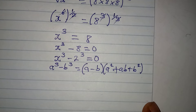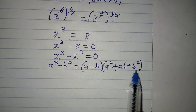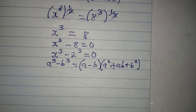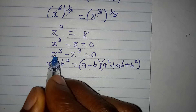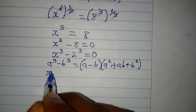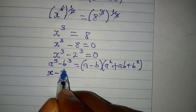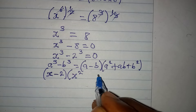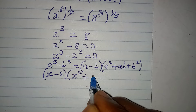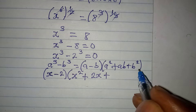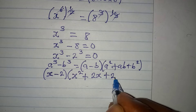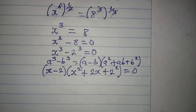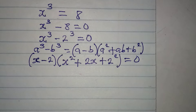How many students can remember this standard identity? If you remember it, this is going to be simple. In place of a minus b we have x minus 2. In place of a squared we have x squared, then plus ab becomes x times 2, which is 2x, then plus b squared becomes 2 squared.